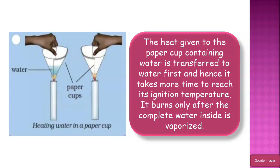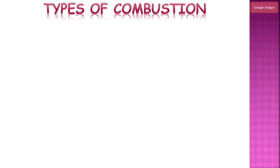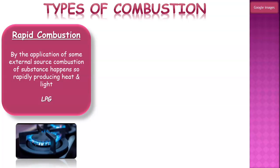Now let's look at different types of combustion. There are mainly three types. First is rapid combustion — this kind of combustion happens only by the application of some external source. It happens so rapidly and produces heat and light. The example is LPG, the cooking gas we use at home. We have to introduce a flame or a spark to start that combustion and it will happen very fast.